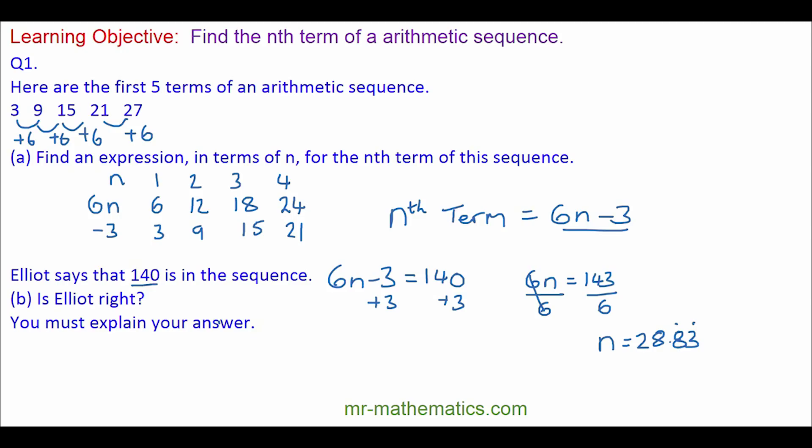Now, because that is not a whole number, so it would be between the 28th and the 29th term, the number 140 cannot be in that sequence. Because n has to be an integer value.